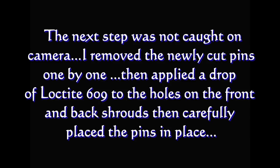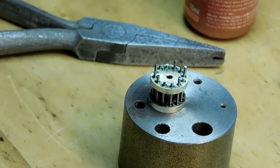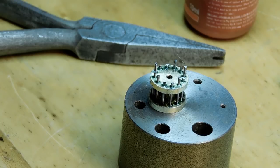Well, the next step was not caught on the camera, but I removed the newly cut pins one by one, then applied a drop of Loctite 609 to the holes on the front and back shrouds, and then carefully placed the pins in place. And that's what it came out looking like. We don't have to worry about the top too much because we're going to grind that off, but the inside we want to get in there and clean that all up.